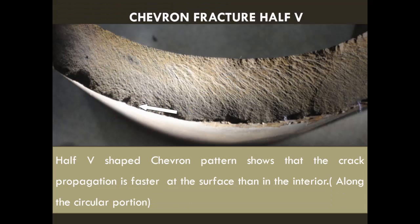Now let us discuss chevron fracture. Here you can see a half-V shaped fracture — not a full V, but a half-V — occurring in a cylinder. You can see lines or an array of lines traveling from one particular direction only. This type of fracture is even faster than the conventional full-V chevron fracture, making it a very rapid brittle fracture.